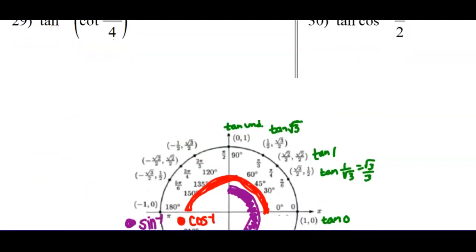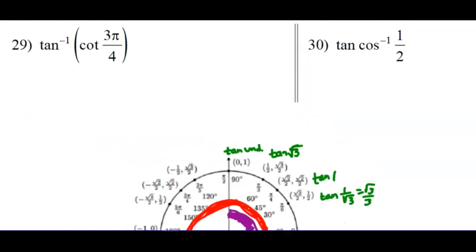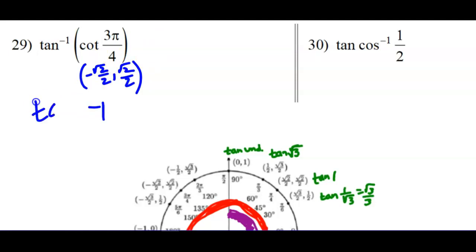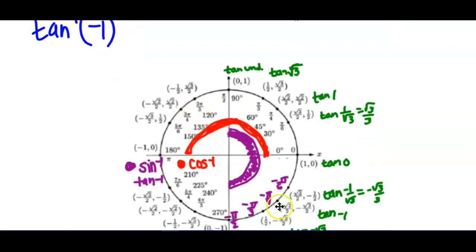Number 29 — go to 3 pi over 4. When we get there, we have negative square root of 2 over 2 and positive square root of 2 over 2. It wants the cotangent, which is x over y, so we'd get negative 1. And it wants where the tangent of negative 1 is. I can't say the tangent is negative 1 at 3 pi over 4 — that's not where inverse tangent is defined. Inverse tangent is defined in quadrants 1 and 4, so I have to say the tangent is negative 1 at negative pi over 4.